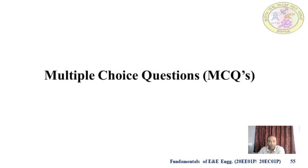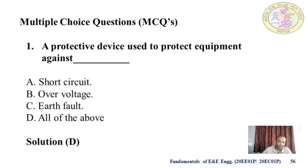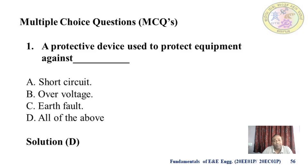Now we will go through multiple choice questions one by one. First: a protective device is used to protect equipment against — short circuit, over voltage, earth fault, or all of the above? Since we discussed all three, the correct answer is all of the above.